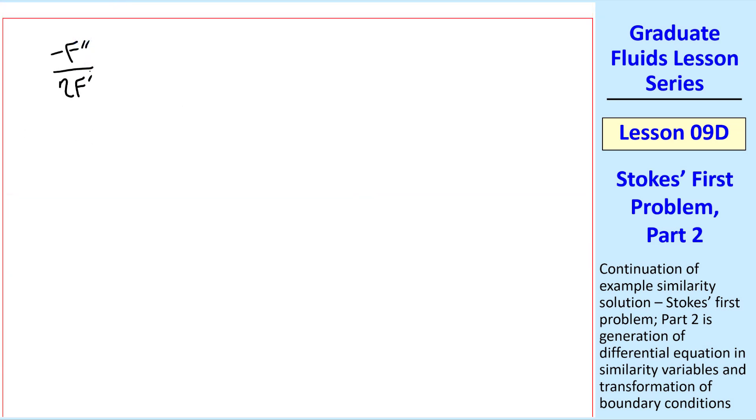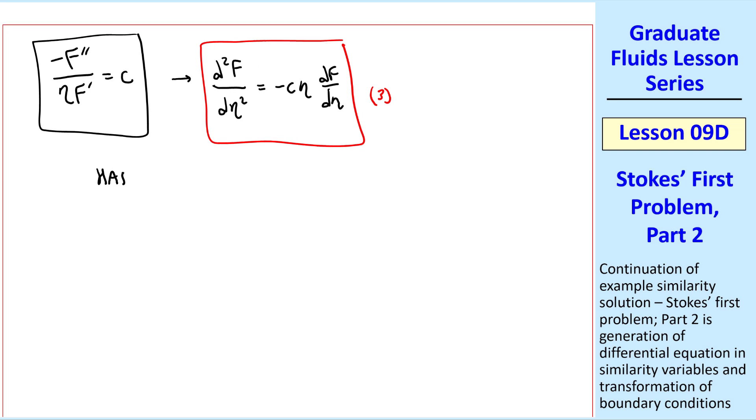Now let's look at the other equation, the right-hand side of the equation above where we separated variables. And let's rewrite this as d²F/dη² equal negative c η dF/dη. I'll call this equation 3.